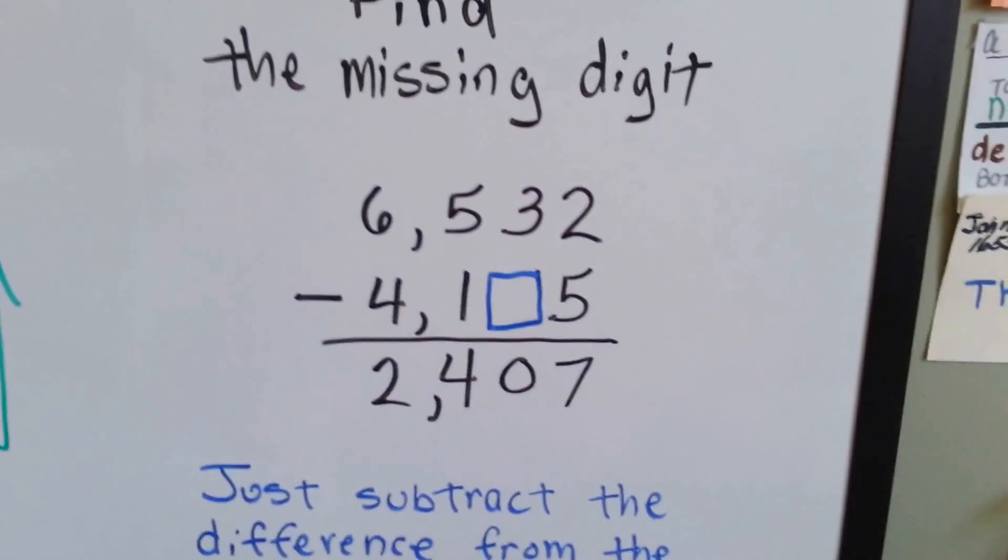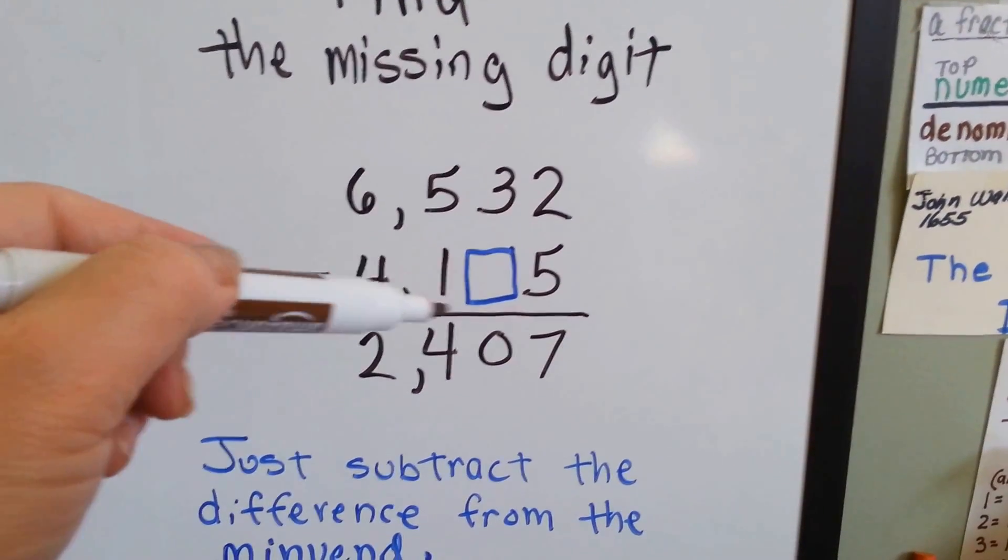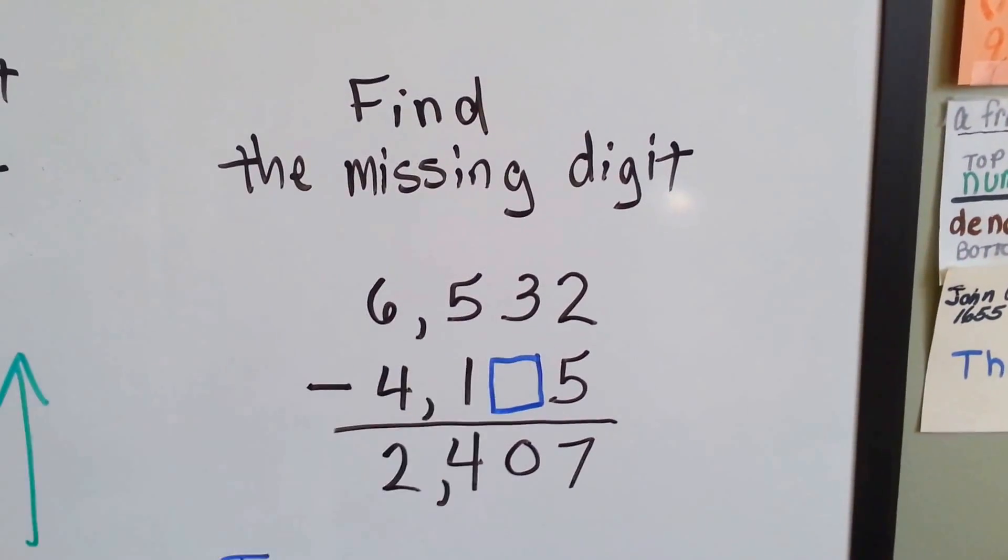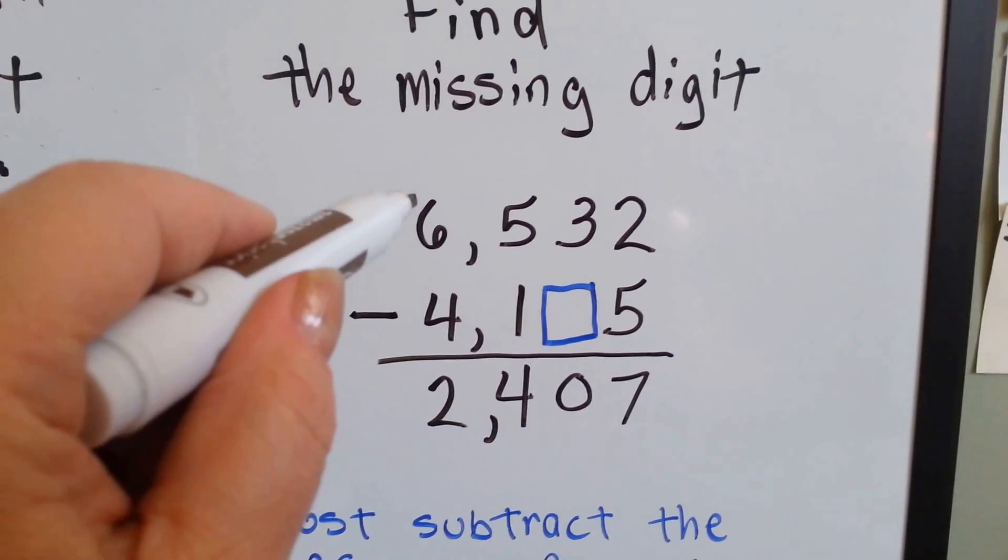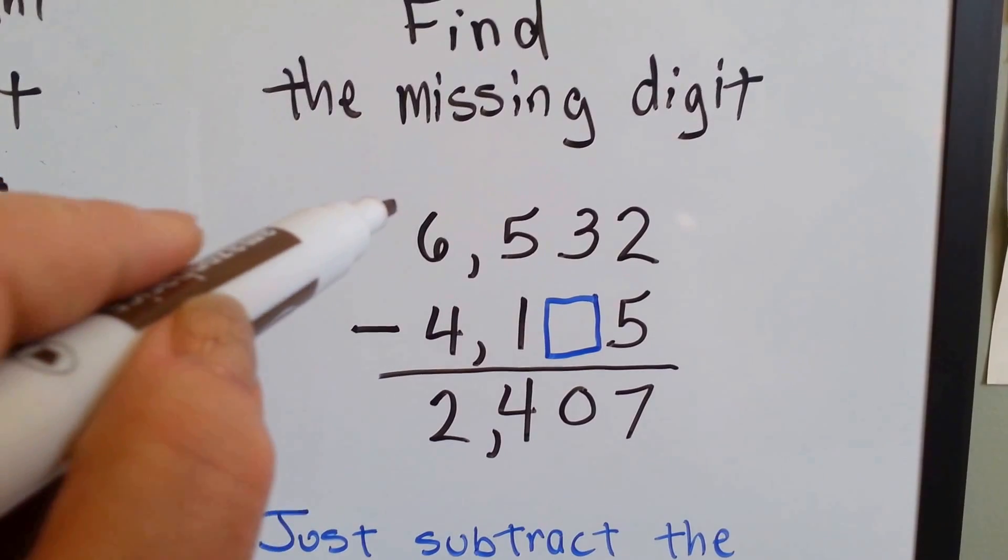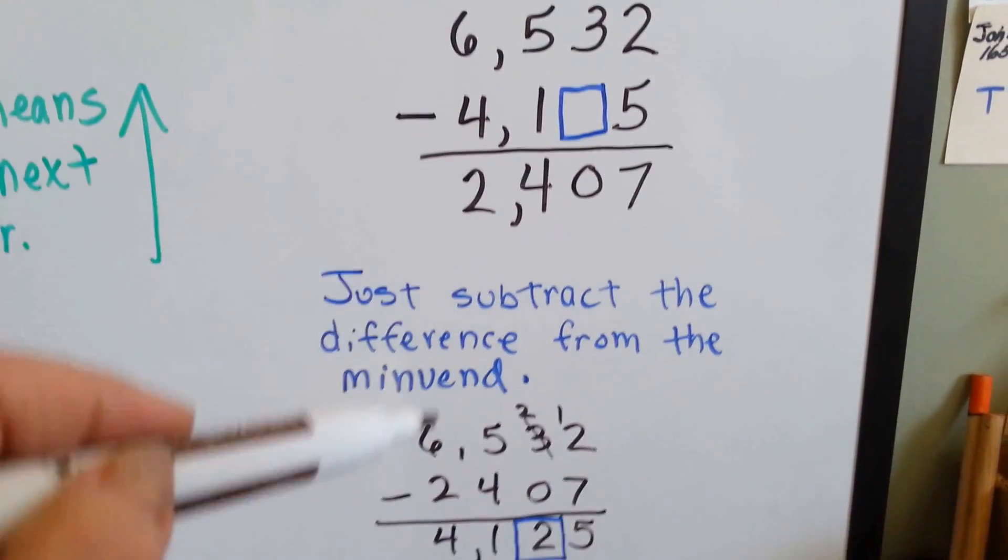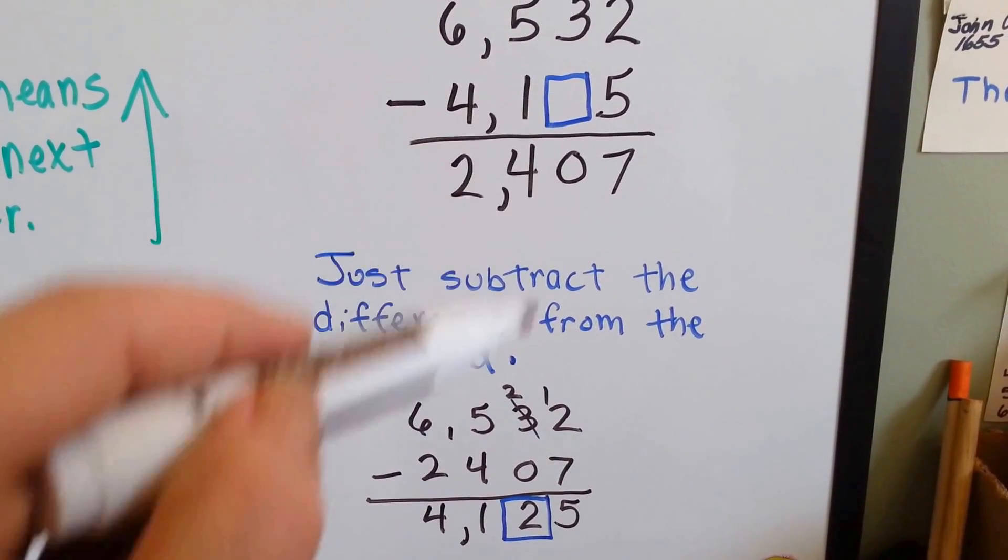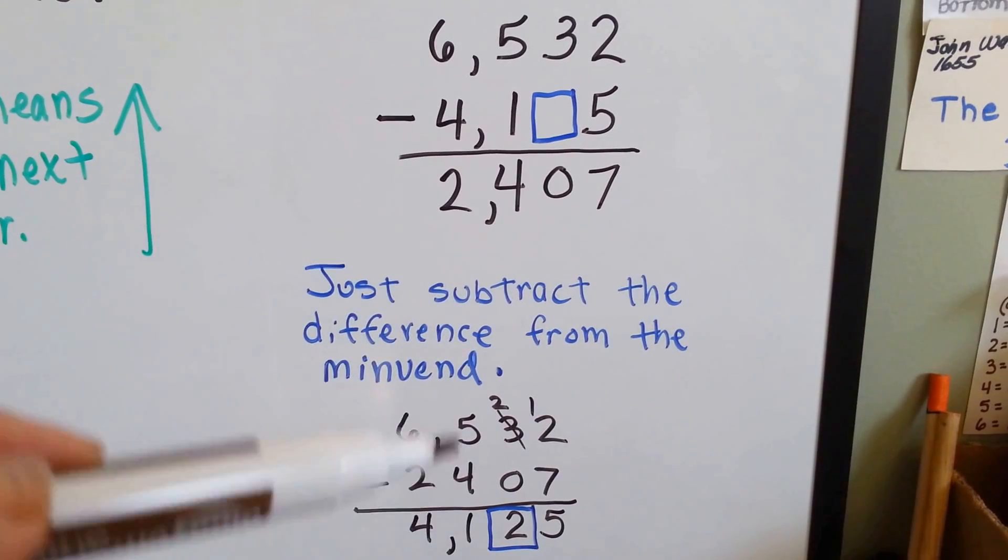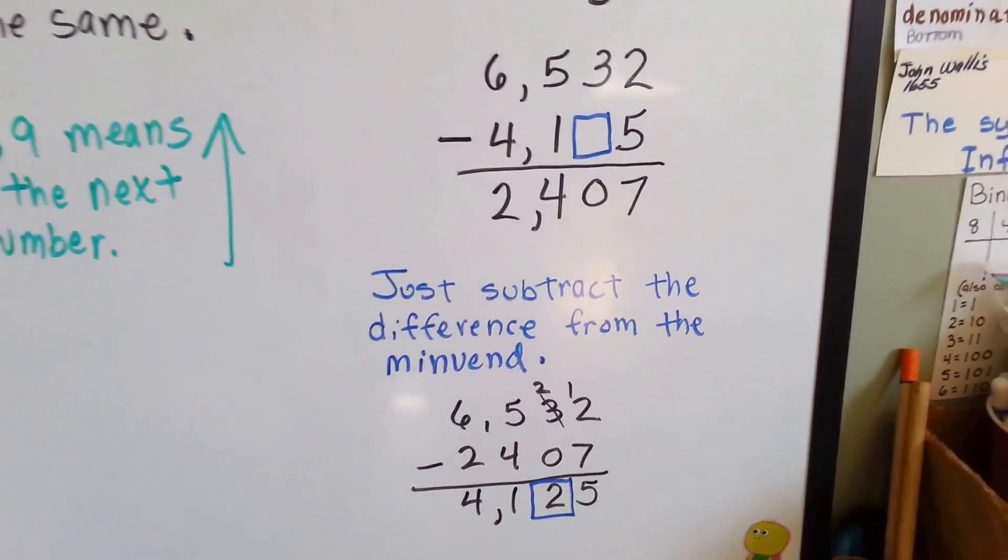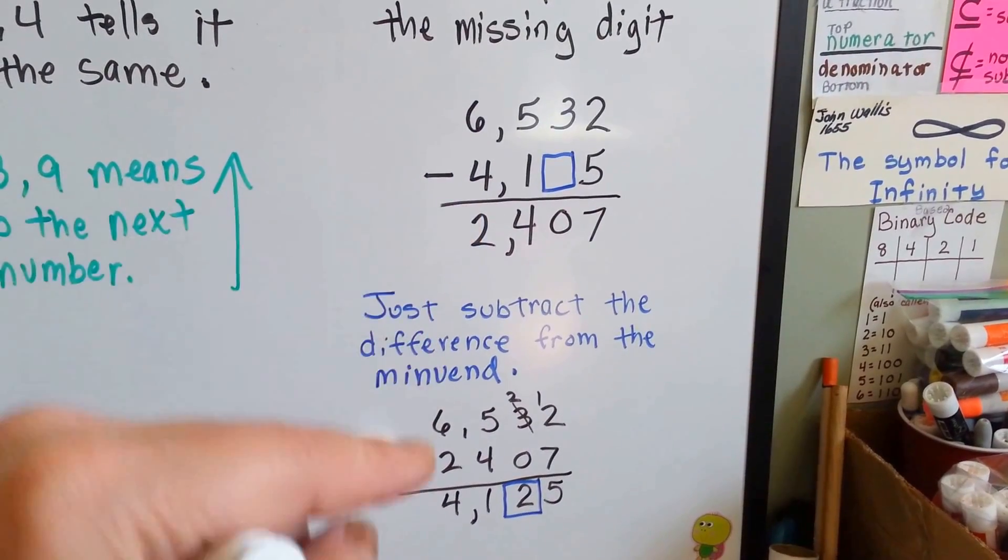Now, the last thing we're going to do is we're going to look at this find the missing digit. If you saw this, 6,532 minus 4,100 something 5, how would you know what that number is? Well, actually, it's algebra. And it's using the inverse operation. If we have this as the minuend and we want to take this away and this is the difference, all we have to do is use this again as the minuend and take this one away. If we subtract this difference from the minuend, we end up finding out that the missing number is a 2. See that? Because the subtrahend ends up becoming the difference. So just take this one away from that one and you'll end up with a new difference and it tells you what the other one is. See that? See how I did that? I flipped these two around so that this ended up becoming the difference and this ended up becoming the subtrahend and that gave us the answer.